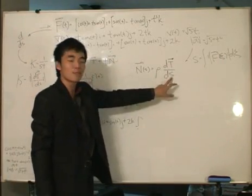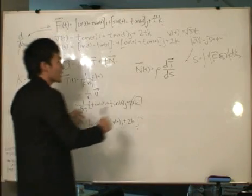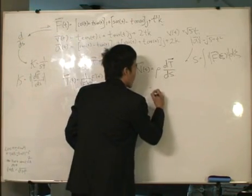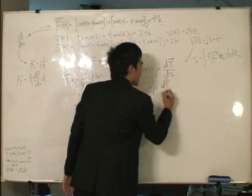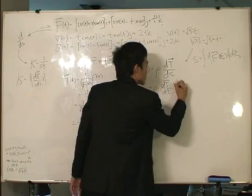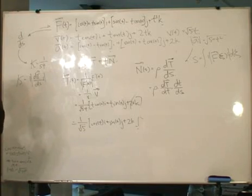So, again, the chain rule comes up again because we get rho differentiating t with respect to t, and then times by differentiating t with respect to s. Application of the chain rule.